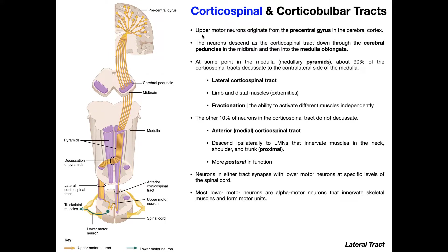Upper motor neurons originate from the precentral gyrus in the cerebral cortex. The precentral gyrus is that ridge of brain tissue that's directly anterior to the central sulcus — this is where we have the motor parts of the brain. Specifically in the precentral gyrus we're talking about the motor cortex or primary motor cortex. You can see here in yellow all these neurons — these are upper motor neurons. The circles at the top are the cell bodies of those upper motor neurons, and they originate in the primary motor cortex of the precentral gyrus.